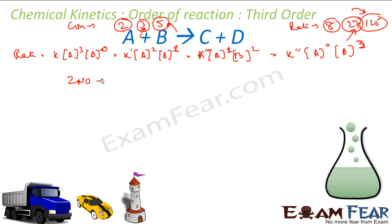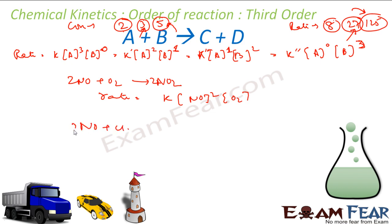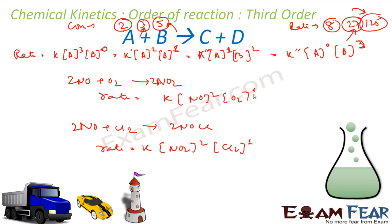Examples of third order reactions include: 2NO + O₂ → 2NO₂, where rate = K[NO]²[O₂]; and NO + Cl₂ → 2NOCl, where rate = K[NO]²[Cl₂]. These powers — 2 and 1 — are all experimental values. In some cases they match stoichiometric coefficients, but they are always experimentally determined.